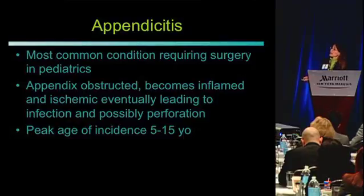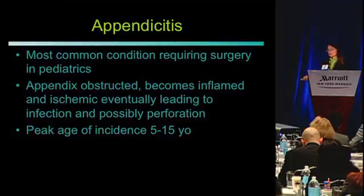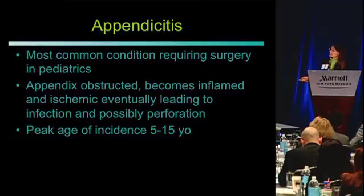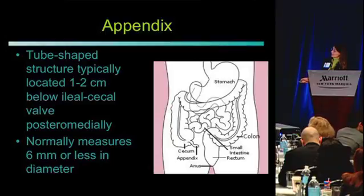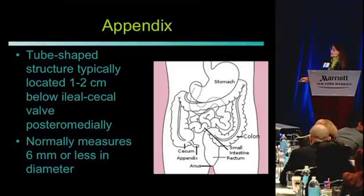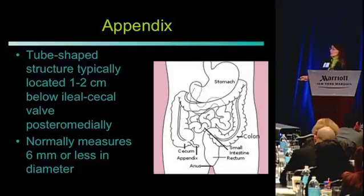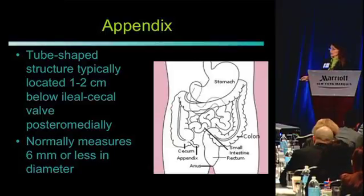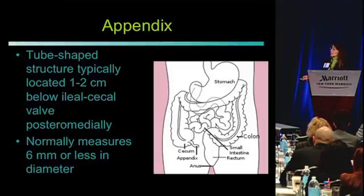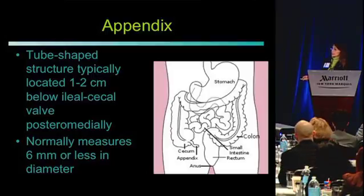Appendicitis is the most common condition requiring surgery in pediatrics. There's a lot in the literature about ultrasound versus CT, but ultrasound is the way we always start at our institution. The appendix becomes inflamed, ischemic, and can perforate — we see this in school-age children. The appendix comes off the end of the cecum extending over the psoas muscles and iliac vessels ideally, but it can go behind the cecum, up into the midline — it can be long or short and very challenging to find.